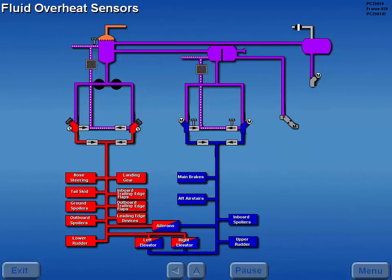Fluid overheat sensors are located in the System A return and System B excess supply lines.